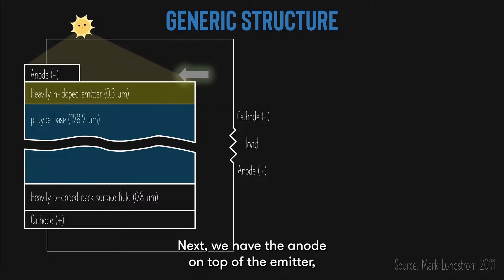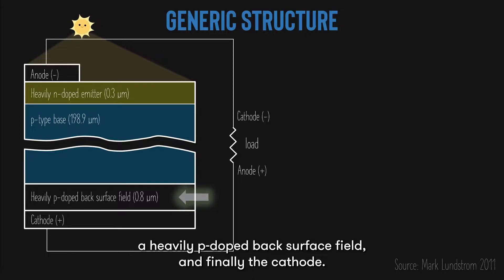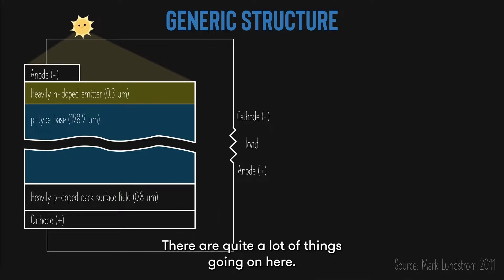Next, we have the anode on top of the emitter, a heavily P-doped back surface field, and finally the cathode. There are quite a lot of things going on here.